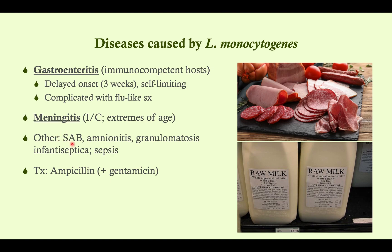Listeria can also cause spontaneous abortion in pregnant women, which is why we tell them to avoid deli meats and raw milk as well as fresh cheeses like queso fresco. It can cause amnionitis leading to spontaneous abortion, or be transmitted from mother to baby resulting in congenital meningitis. It can also cause granulomatosis infantiseptica — not relevant for boards — and sepsis.